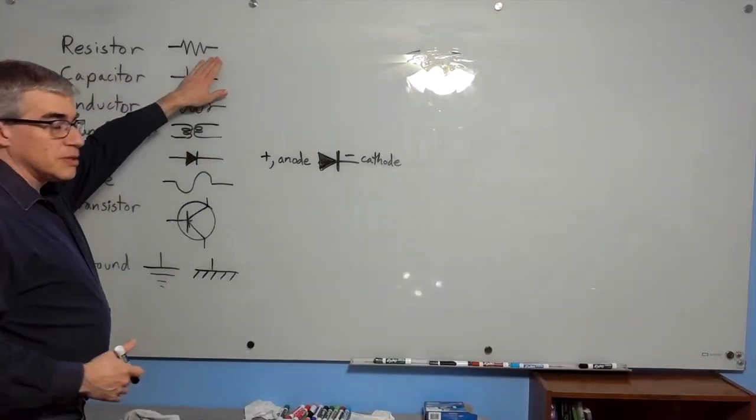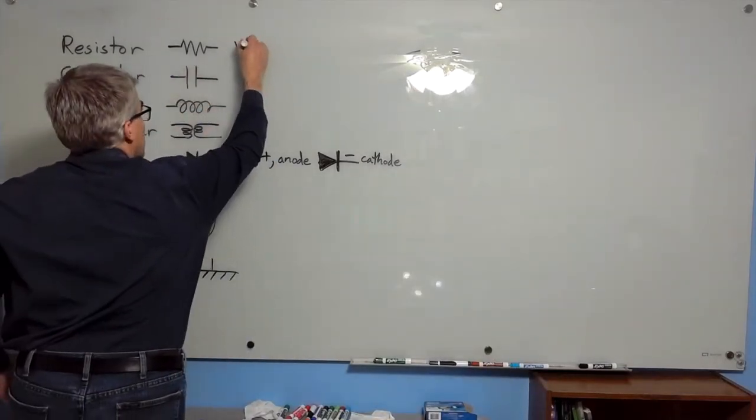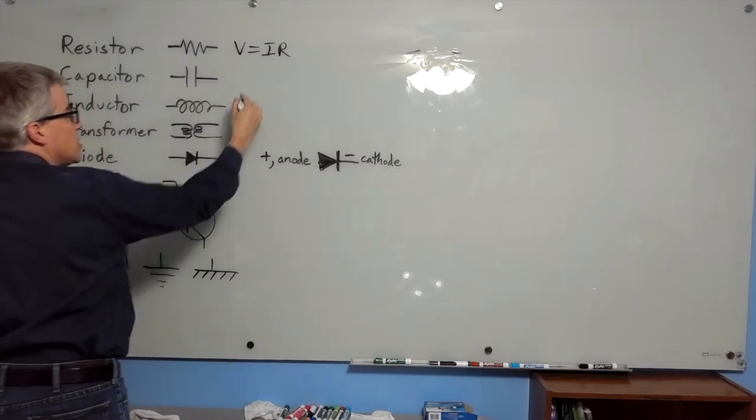Resistor is this symbol. It resists current, V equals IR. Capacitor stores charge.